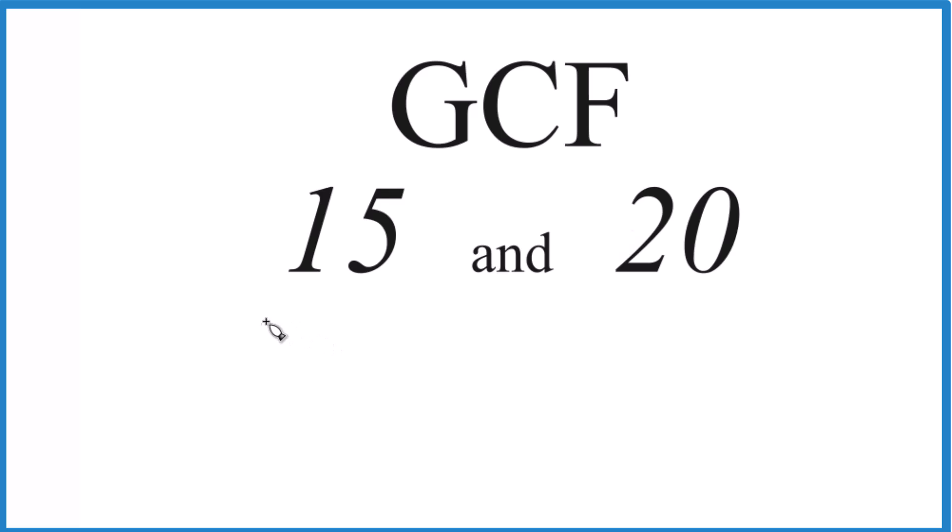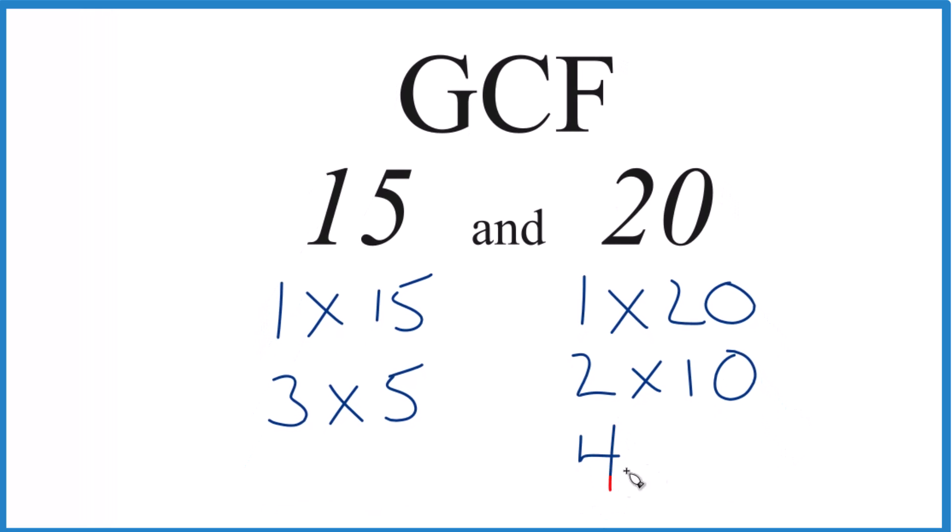So for 15, we could multiply 1 times 15, that equals 15, or 3 times 5, that equals 15. Those are the factors for 15. For 20, we could multiply 1 times 20, that equals 20, 2 times 10, and 4 times 5.